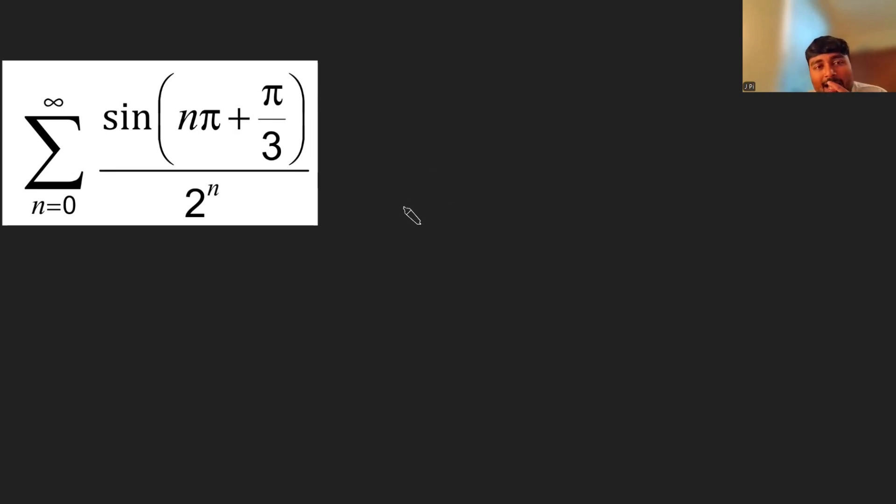Let's investigate what happens with small values of n. When we plug in n equals 0, we get sine of 0 pi plus pi over 3, and sine of pi over 3 is root 3 over 2 divided by 2 to the 0. I could simplify this, but I'm going to leave it like that for the time being.